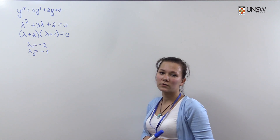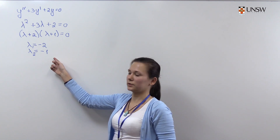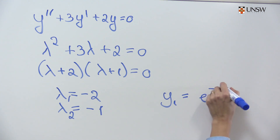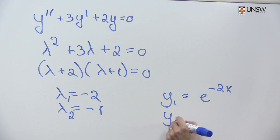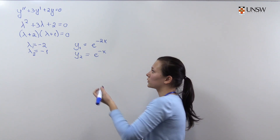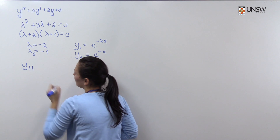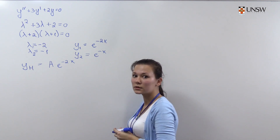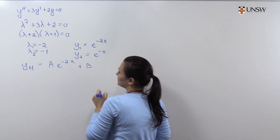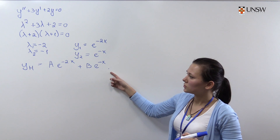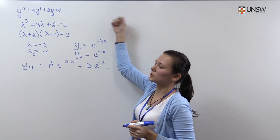So this is the first root and this is the second root of the characteristic equation. The solution corresponding to root minus 2 will be of the form e to the power minus 2x, and the solution corresponding to the second root will be e to the power minus x. Therefore the general solution will be the linear combination of these two: constant a multiplied by e to the power minus 2x, plus constant b multiplied by e to the power minus x.